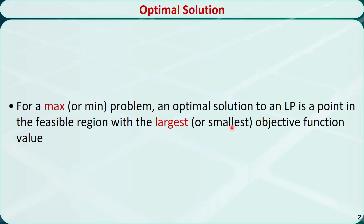For a maximization problem, an optimal solution is a point in the feasible region with the largest objective function value. If it's a minimization problem, an optimal solution is a point in the feasible region with the smallest objective function value.